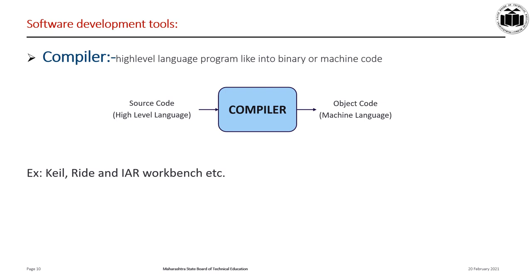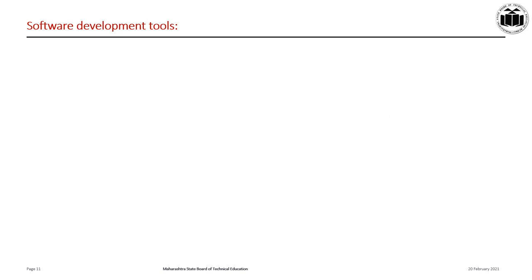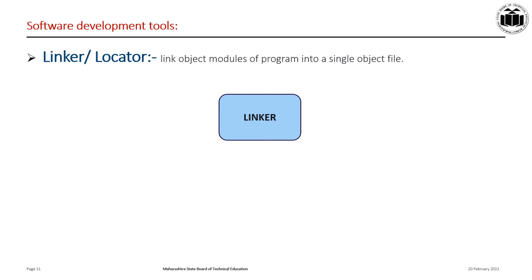A cross-compiler is used to create executable code for a platform other than the one on which the compiler is run. They are used to generate executables for embedded systems on multiple platforms. A linker is a program in a system which helps to link object modules of a program into a single object file. It performs the process of linking. Linkers are also called link editors or locators. Linking is the process of collecting and maintaining pieces of code and data into a single file. The linker also links a particular module into the system library. It takes object modules from the assembler as input and forms an executable file as output.